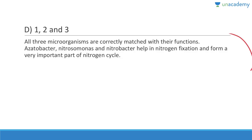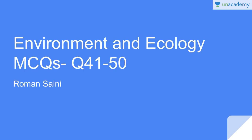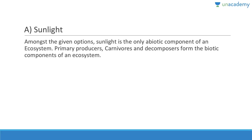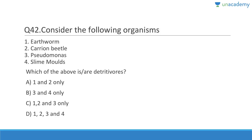Questions 41 to 50. Question 41: Which of the following is an abiotic component of an ecosystem? Primary producers, decomposers, and carnivores are all living, but sunlight is not living. So sunlight is the abiotic component. Question 42: Which of the following are detritivores — earthworm, carrion beetle, Pseudomonas, slime molds? Detritivores eat dead or decaying organisms. Earthworm and carrion beetle are there, but Pseudomonas are bacteria and will not be counted as detritivores. Answer is A, 1 and 2.